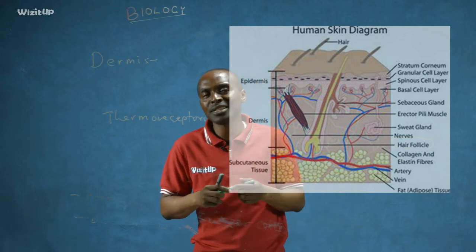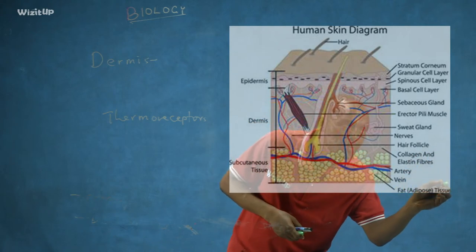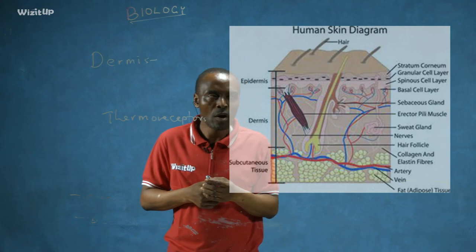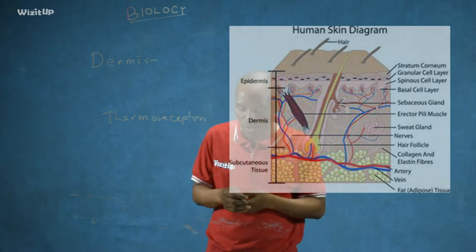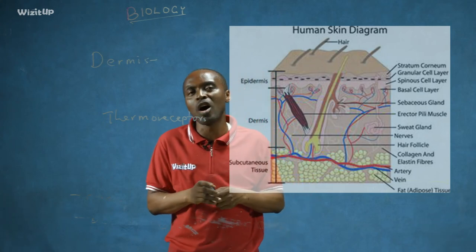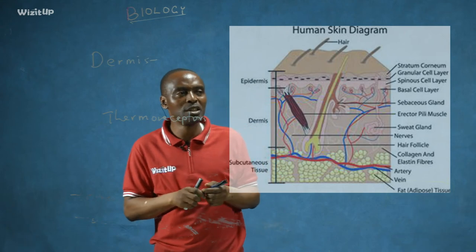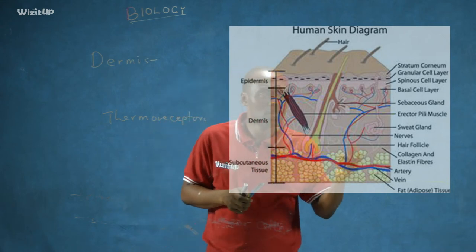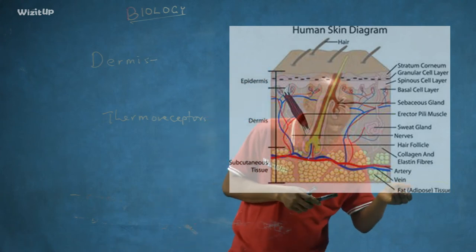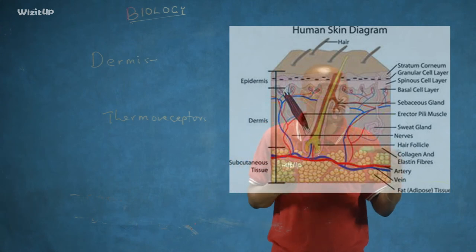Beneath the skin is an area called the fat adipose tissue, which consists of fatty deposits. These fatty deposits help regulate body temperature — they warm our body and can also serve as stored heat reserves. This is also referred to as the subcutaneous fat deposit, meaning the fatty tissue found beneath the skin.